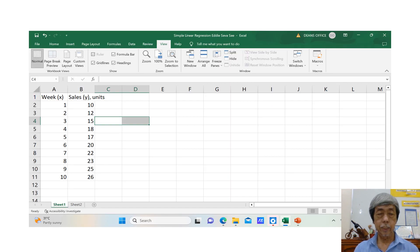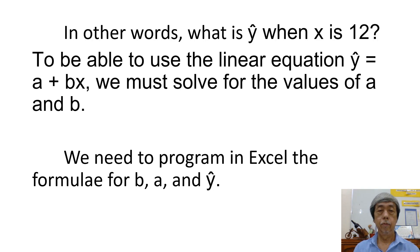This is the Excel sheet showing the collected or historical data for week X and sales Y. In other words, what is Y-carat when X is 12? To be able to use the linear regression Y-carat equals A plus Bx, we must solve for the values of A and B.